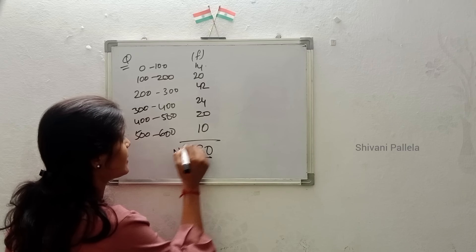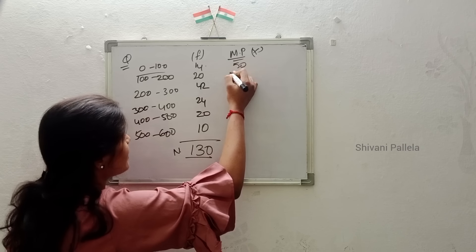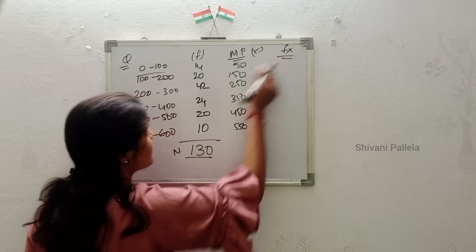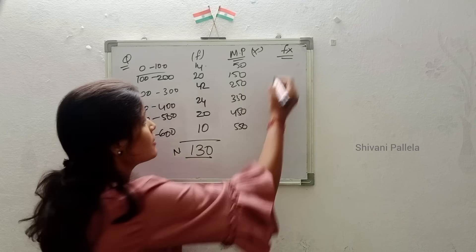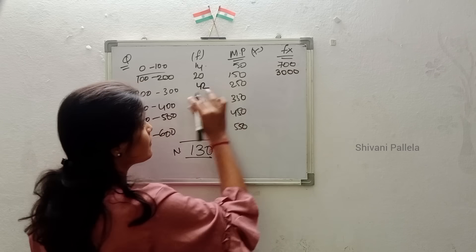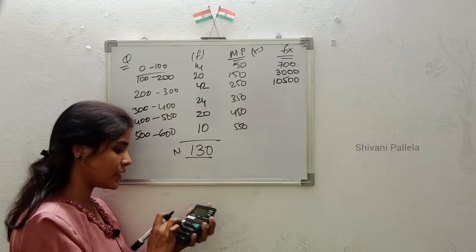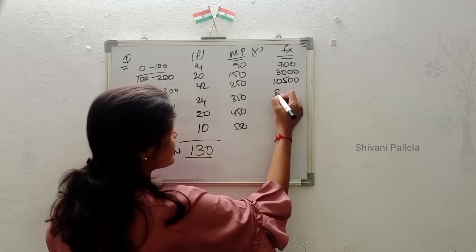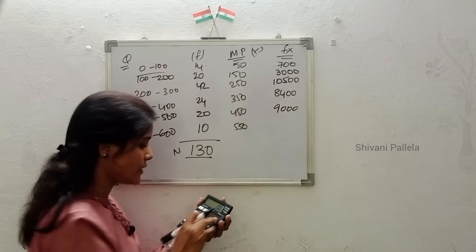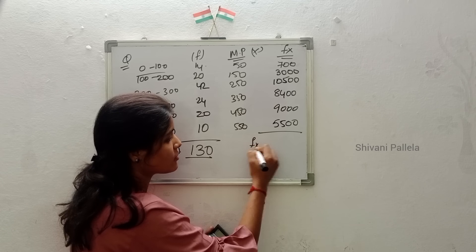Next, calculate midpoints — here we call it x: 50, 150, 250, 350, 450, and 550. Next, the F×x column: 14 into 50 is 700, 20 into 150 is 3,000, 42 into 250 is 10,500, 24 into 350 is 8,400, 20 into 450 is 9,000, and 10 into 550 is 5,500. Just add up all the F×x values.